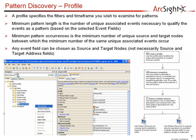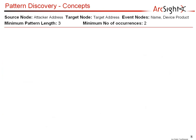So how do we identify the events and how do we identify the source and target combinations? In this case we are looking at the source being the source address field, the target being the target address field, whereas for the events we are looking at the name field.